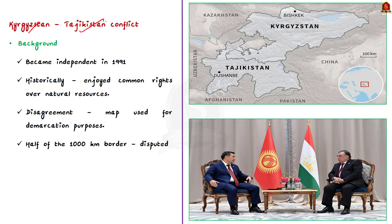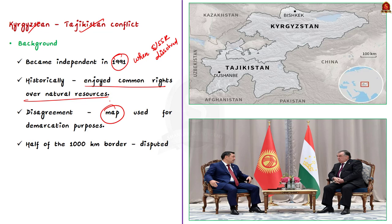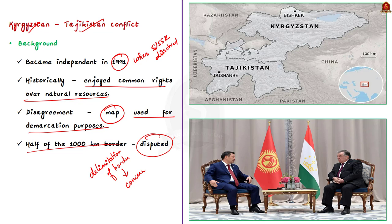Both Kyrgyzstan and Tajikistan became independent in 1991 when the Soviet Union dissolved. Historically, the people of both countries enjoyed common rights over natural resources. The main disagreement was over the map used for demarcation purposes, and the delimitation of the border was also a concern for continuous escalation. Kyrgyzstan and Tajikistan share a thousand-kilometer-long border, and almost half of that border is disputed. Regular talks have tried to resolve the issue, but the conflict is still ongoing.